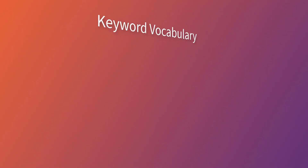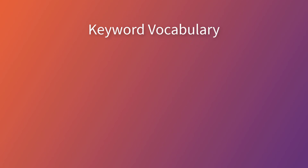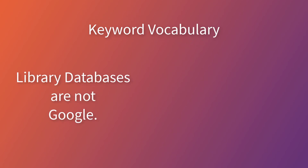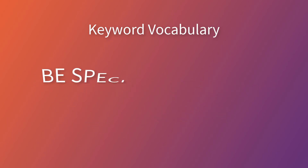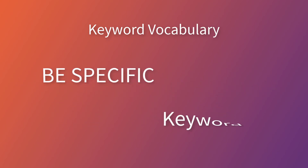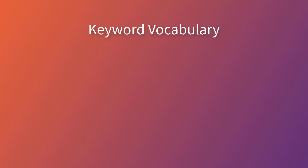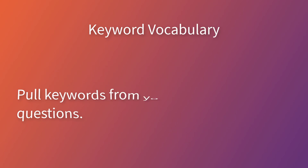The first thing to do is develop a keyword vocabulary for your topic. Library databases are not like Google and will search for exactly what you type in. It is important to be specific and search with keywords that describe a topic or are somehow related to it. Let's look at an example research question and come up with a list of possible keywords to search.